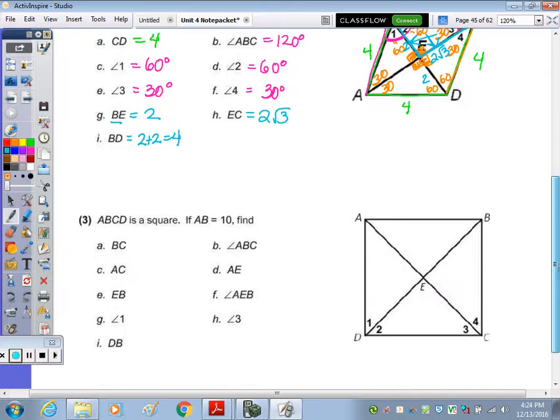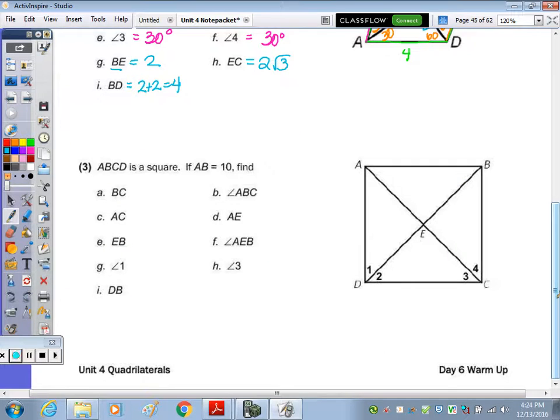The square, I'm going to follow the same format. It says that AB is 10, so that means all sides are 10, AB, BC, so that's part A, AD, and CD. We also know there are 90 degree angles in here, and that each angle is 45. If you bisect a 90 degree angle, you've got two 45s. So angle one is 45 degrees.